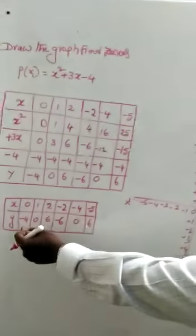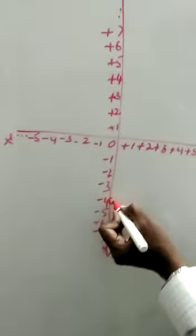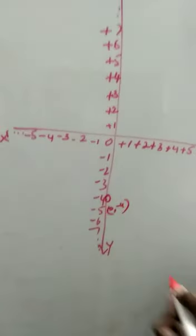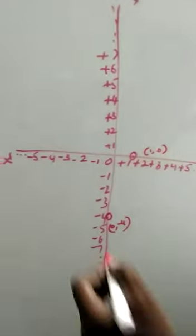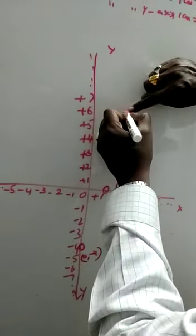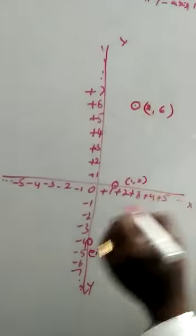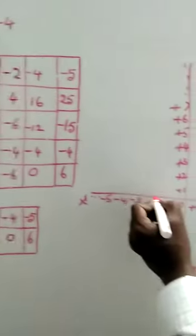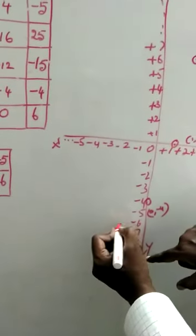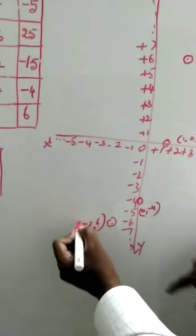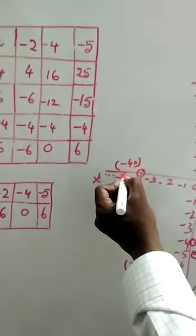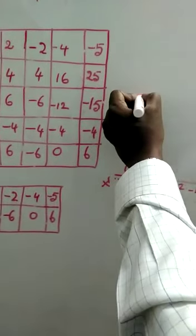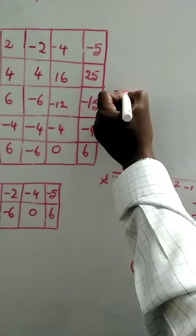Plot each point: x equals 0 gives y equals minus 4, so mark (0, minus 4). x equals 1 gives y equals 0, mark (1, 0). x equals 2 gives y equals 6, mark (2, 6). x equals minus 2 gives y equals minus 6, mark (minus 2, minus 6). x equals minus 4 gives y equals 0, mark (minus 4, 0). x equals minus 5 gives y equals 6, mark (minus 5, 6).